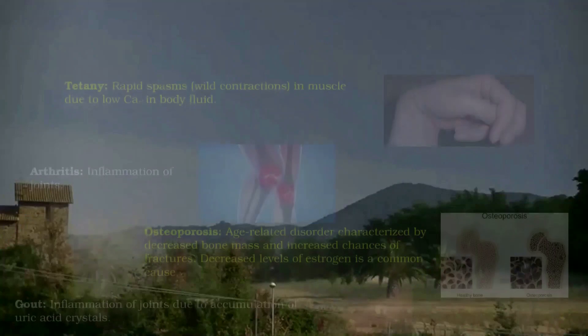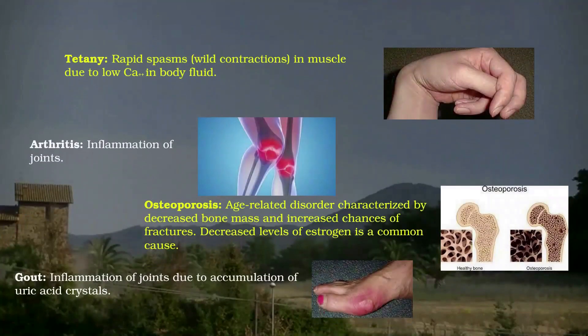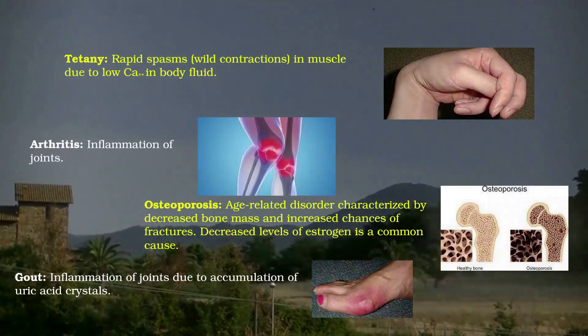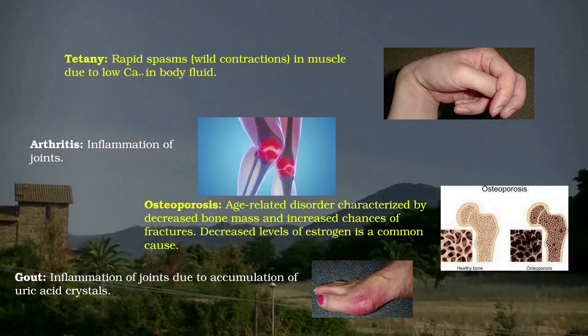Other disorders of the muscular and skeletal systems are: 1. Tetany. It is characterized by rapid spasms and wild contractions in the muscle, due to low calcium ions in body fluid.